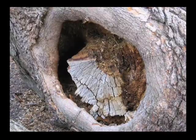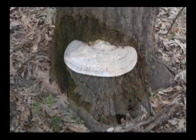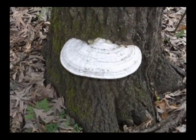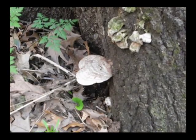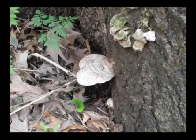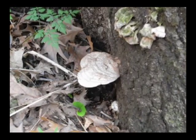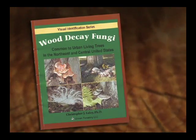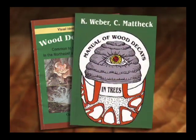Other external indicators of decay include open cavities. Fungal fruiting bodies are a sign of the presence of wood decay fungi, and they present the opportunity to identify the species of fungus and thereby know its significance and probable course of advancement. Examples of useful wood decay identification books include Wood Decay Fungi and Manual of Wood Decays.